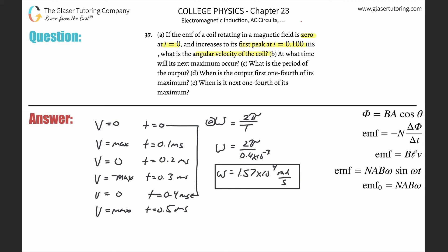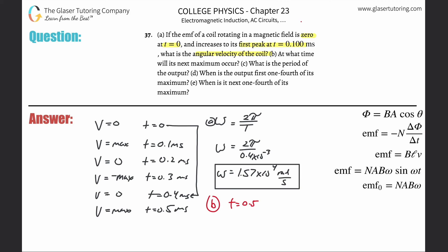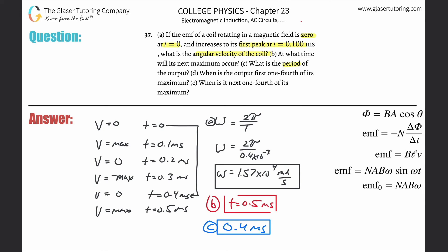That's letter A. Letter B: at what time will its next maximum occur? When they say maximum I believe they mean the next positive maximum, which we already identified — it's going to occur at t equal to 0.5 milliseconds. That's the answer for letter B. For letter C, what is the period of the output? We already answered that: the period is 0.4 milliseconds.